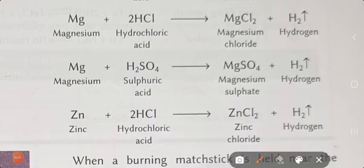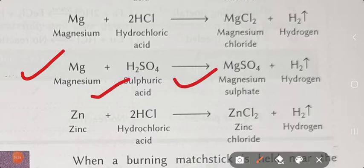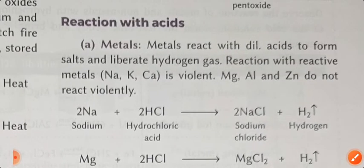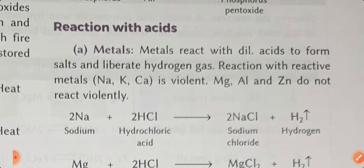In example number 3, magnesium reacts with sulfuric acid to give magnesium sulfate plus hydrogen gas. Zinc reacts with two HCl - hydrochloric acid - to give zinc chloride and hydrogen gas. So when metal reacts with acid, what is common? Hydrogen gas is evolved.